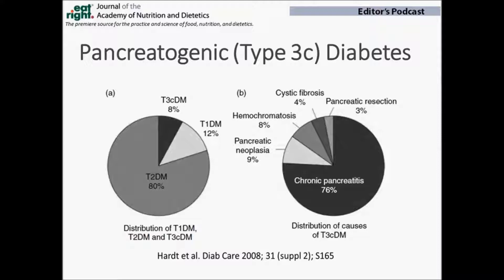How is type 2 diabetes different from type 3C diabetes, and how do you distinguish type 3C diabetes? Type 3C diabetes can result from a number of different pancreatic diseases, including acute and chronic pancreatitis, cystic fibrosis, surgical resection of the pancreas, as well as pancreatic cancer. Based on a study of almost 2,000 patients with diabetes at an academic medical center in Germany, 8% of all diabetics actually have type 3C diabetes, and 9% of those patients have it as a consequence of pancreatic cancer.